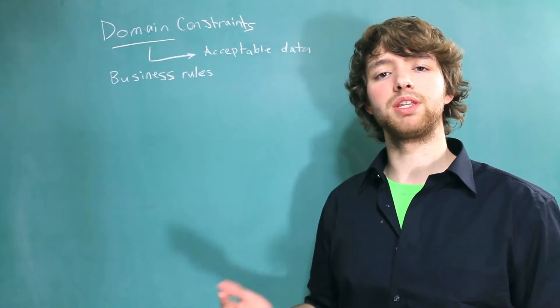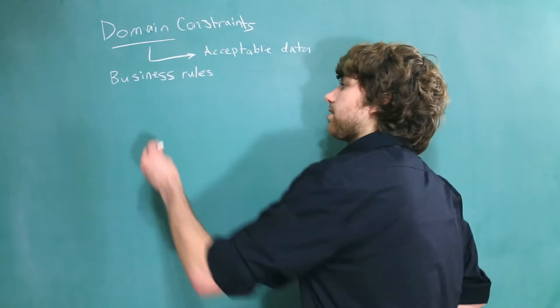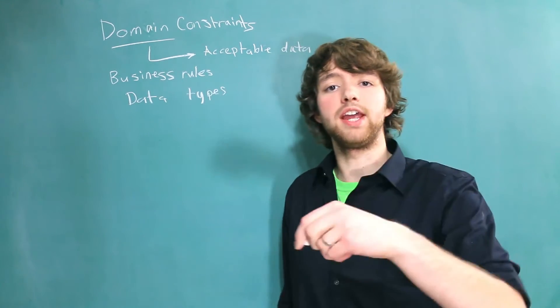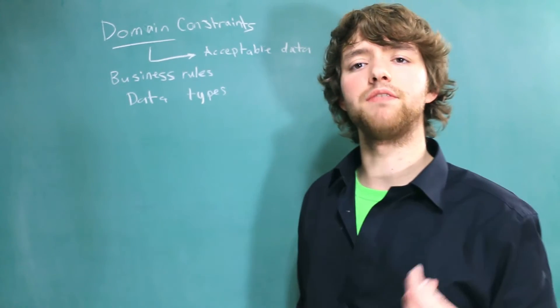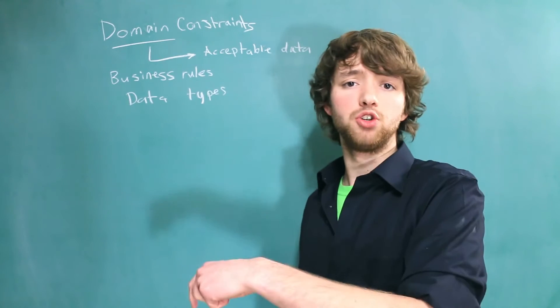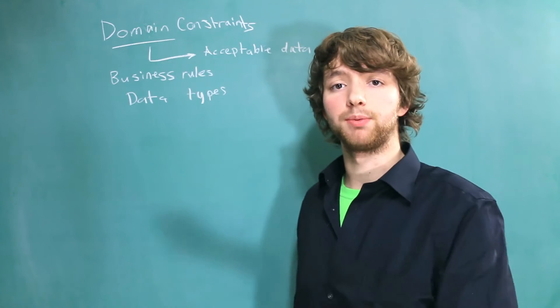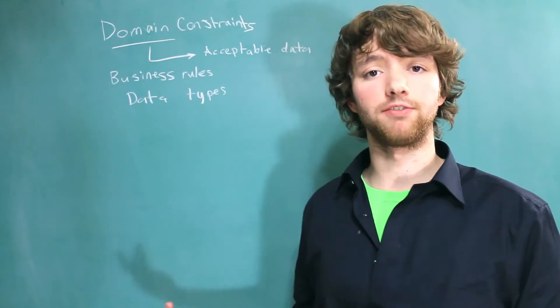But first let's talk about some of the more general ways we can restrict data. Obviously we can use data types. What that does is force the data to be inputted in the database to be of a certain format. That means if it's a numeric column, it's going to reject string data. We will cover the data types in an upcoming video, but just understand what they are for now.